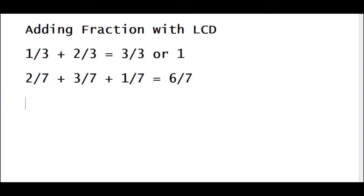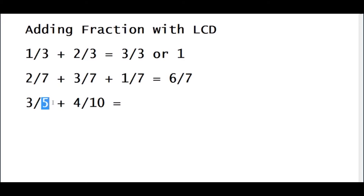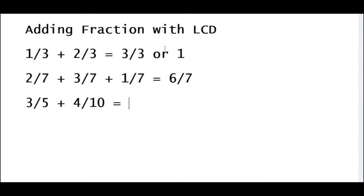Now let's have another example. This time we have 3 over 5 plus 4 over 10. That would be a problem because you cannot add right away if the 2 fractions don't have the same denominators. So we have to get a common denominator. We need to get the LCD, or the least common denominator.